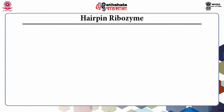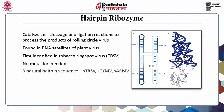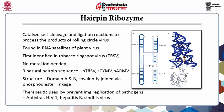Hairpin ribozymes are small ribozymes found in the satellite of plant viruses, especially RNA satellites of plant viruses. They assist in the cleavage and ligation of products of rolling circle replication to form circular and linear satellite RNAs. Even though similar to hammerhead ribozymes, they do not require a metal cofactor for the reaction. Examples include the satellite RNA of tobacco ringspot virus, chicory yellow mottle virus, and arabis mosaic virus.